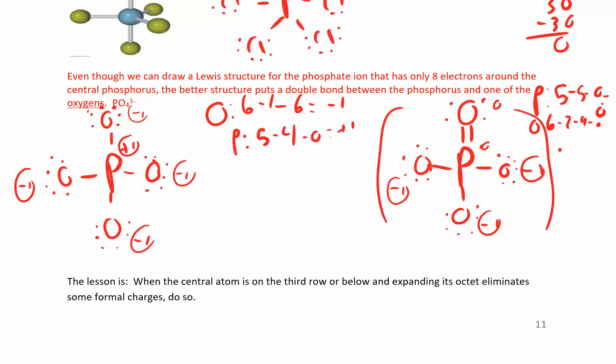This still has a charge. So I'm still going to put that in minus three. This guy should also have brackets with a minus three. So this one's actually a better structure, better describes what's actually happening here. It has a lower set of formal charges. So when the central atom is on the third row or below and expanding out the octet, eliminate some of the formal charges, then you should do that.